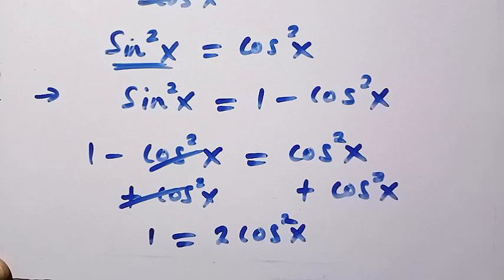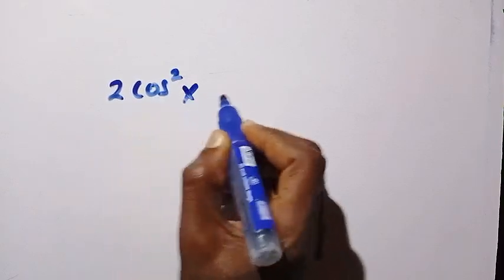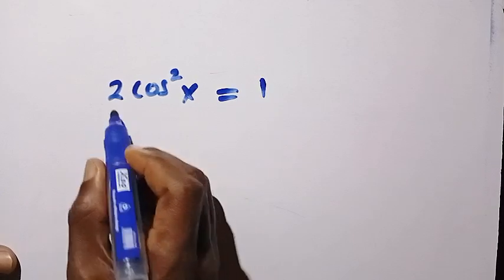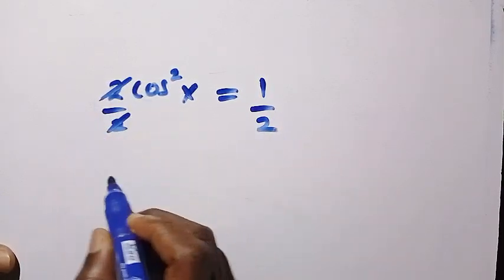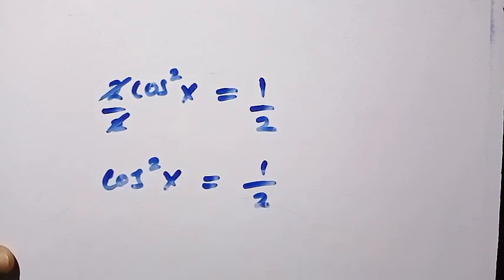And next we have 2 cos squared x equals 1. So by dividing both sides by 2, we make cos squared x the subject of the formula, which is cos squared x equals 1 divided by 2.